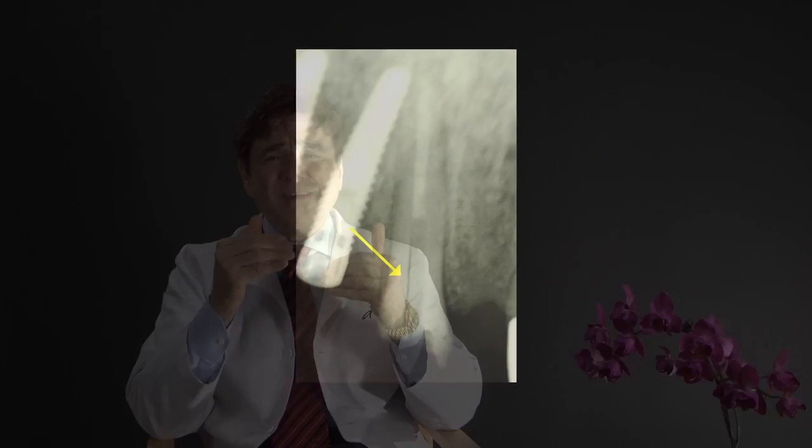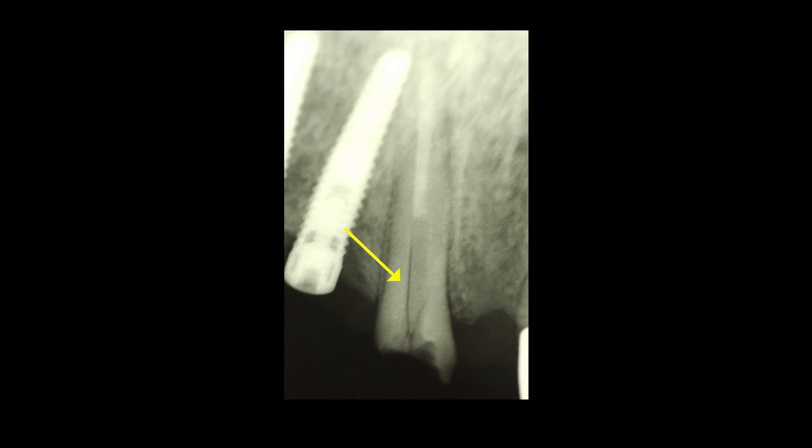Resistance to catastrophic root failure: root fracture is another reason for failure of the post and core system. The primary goal of restoring endodontically treated teeth is to develop a design which distributes occlusal stress uniformly while preserving tooth structure if the restoration fails during occlusal stress or dental trauma. Traditional cast posts have a modulus as high as 10 times greater than that of natural dentin, and this incompatibility can create stress concentrations in the less rigid root, resulting in post separation or failure.